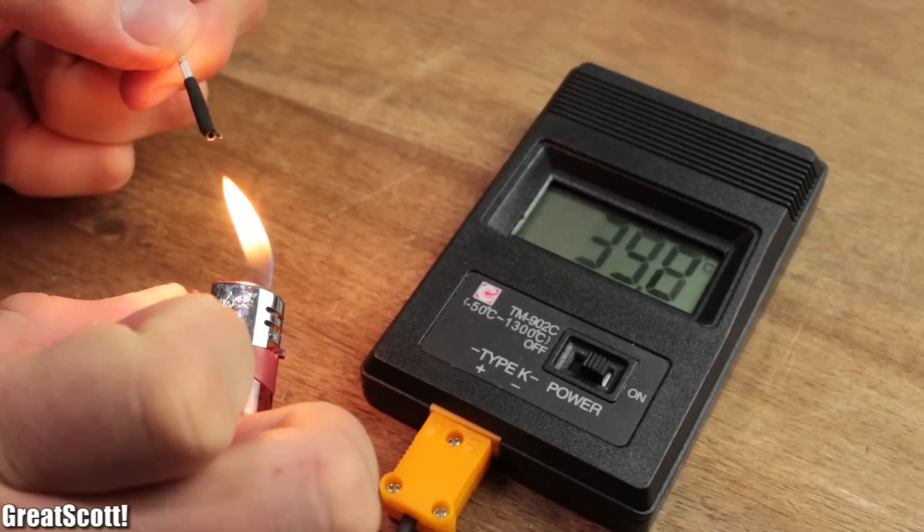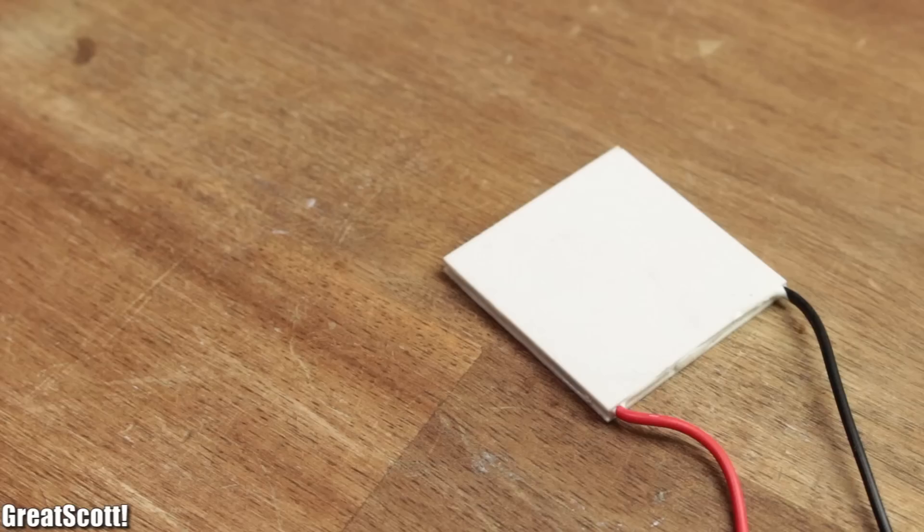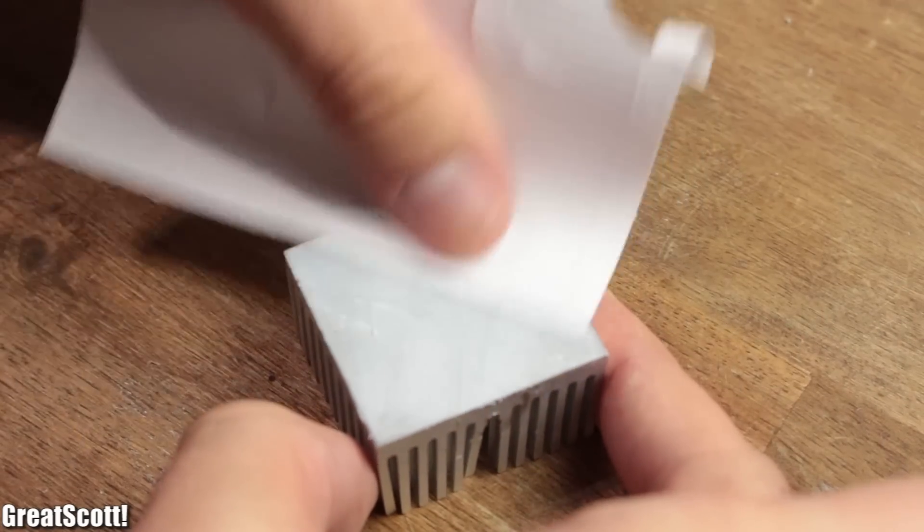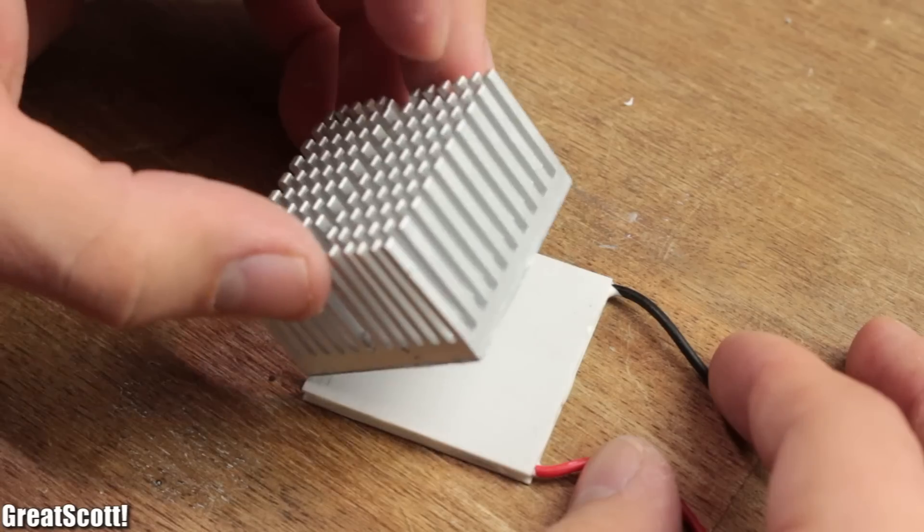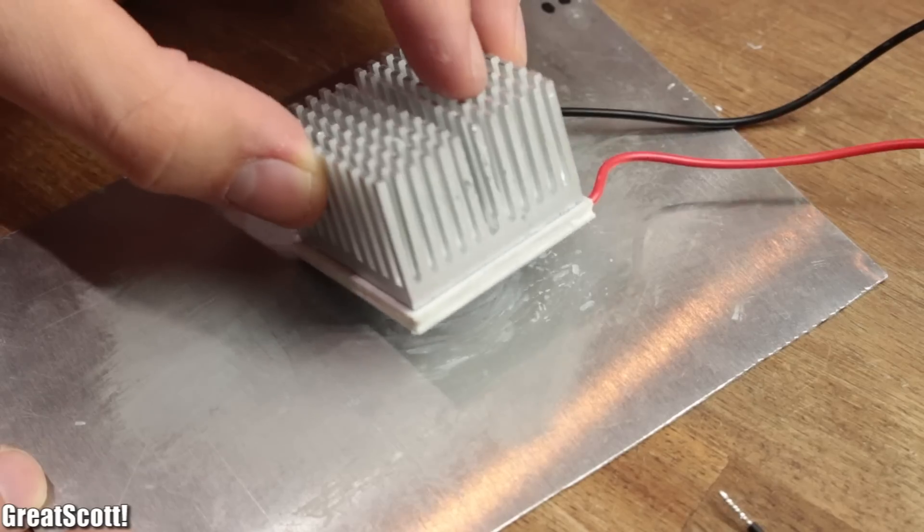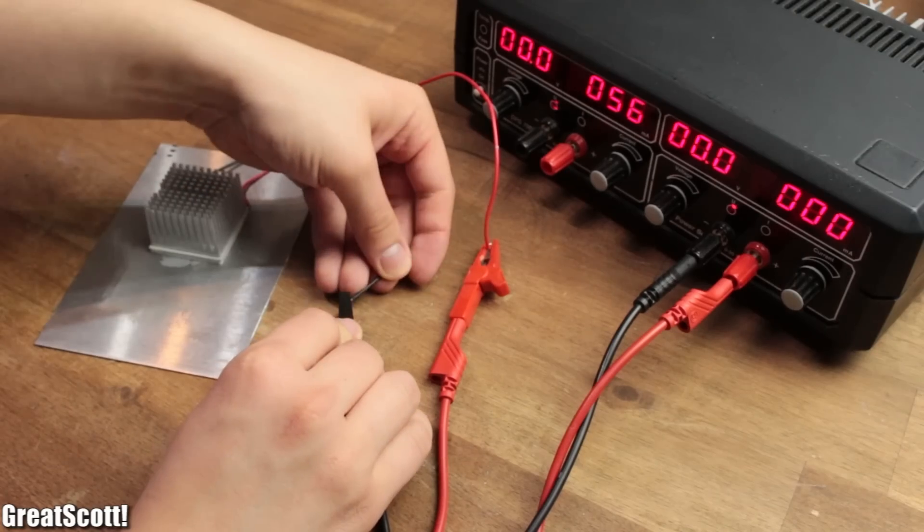But this also works in the reverse direction. As an experiment, I used thermal paste to bind the side without text of the Peltier module to a small heatsink from an old PC and the other side to an aluminum sheet. If I now apply a small voltage,